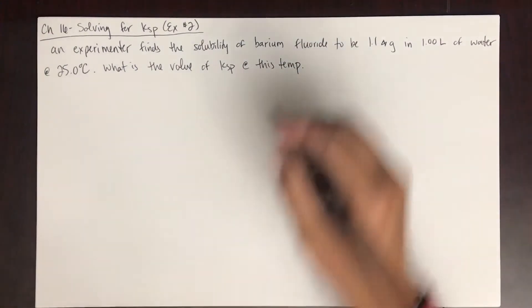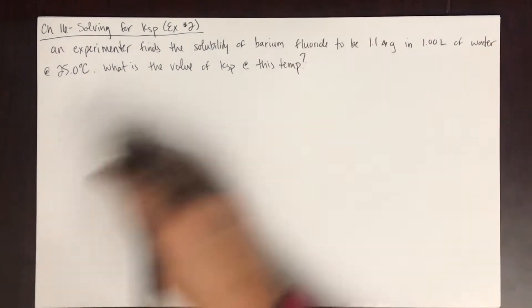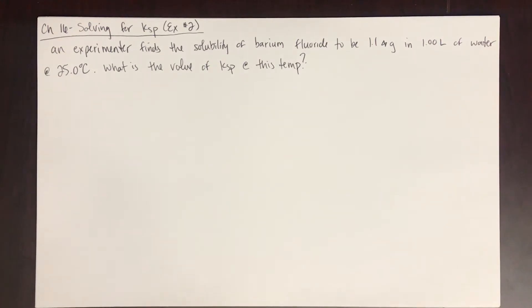So whenever we're solving for KSP, it's going to be at a certain temperature. We'll always be solving for KSP at 25 degrees Celsius. That's the standard temperature when you're looking up these values in a reference table. They always give the temperature for these values because we know temperature affects solubility. Increasing the temperature increases the solubility. So it's always important that you're told the temperature.